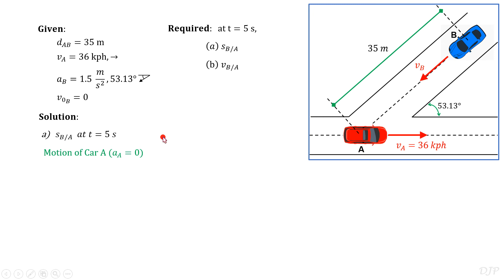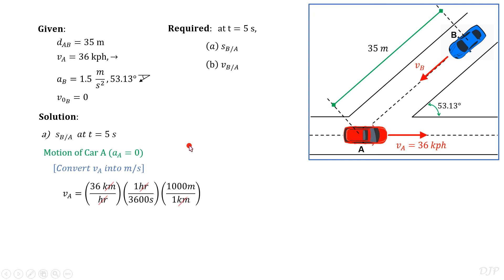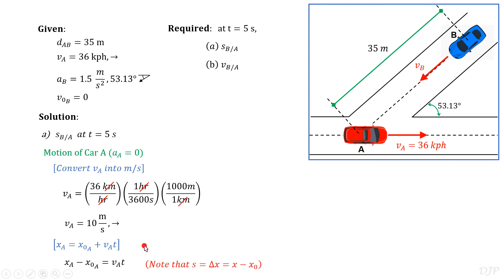One car is moving with constant velocity while the other is with constant acceleration. Let's start with the motion of car A. Since we will apply the kinematic formula, let's convert the velocity of car A into meters per second, giving us V sub A equal to 10 meters per second to the right. We will use the first kinematic formula to get the displacement of car A. By transposition, we express the change in position of car A equal to its velocity times time. Recall that displacement is defined as change in position. Therefore, we can draw and solve the displacement of car A equal to 50 meters to the right.